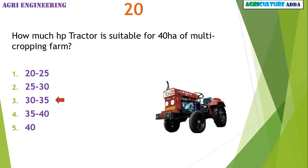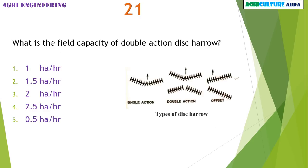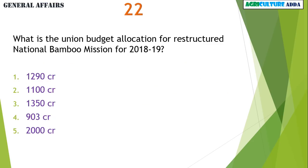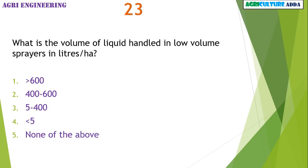How much HP tractor is suitable for 40 hectare of multi-cropping farm? 30 to 35 HP. What is the field capacity of double action disc harrow? 1 hectare per hour. What is the union budget allocation for restructured National Bamboo Mission for 2018-19? 1,290 crores.